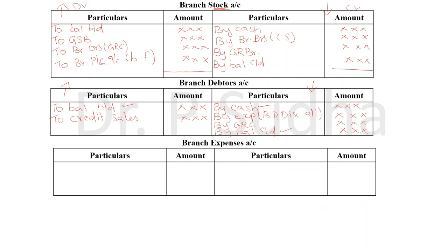The next account is branch expenses account. This is a nominal account — all expenses and losses should be debited. We record all expenses in the debit side: rent, salaries, bad debts, and so on. Finally, tally the account; the balancing figure will be in the credit side and that will be transferred to branch profit and loss account.